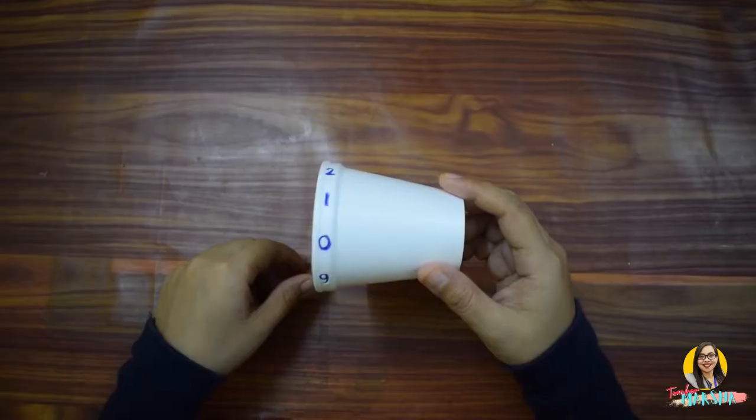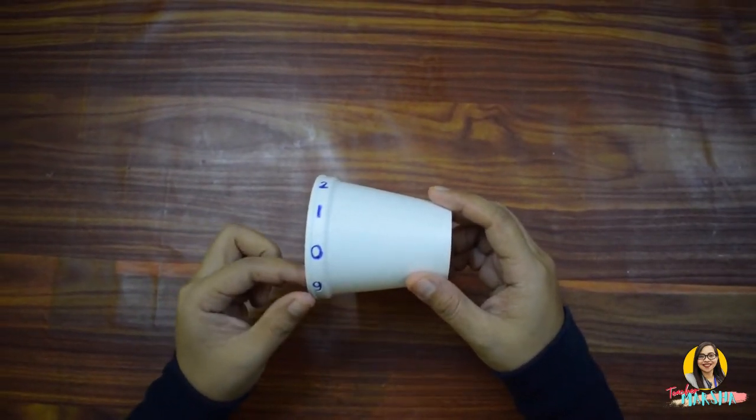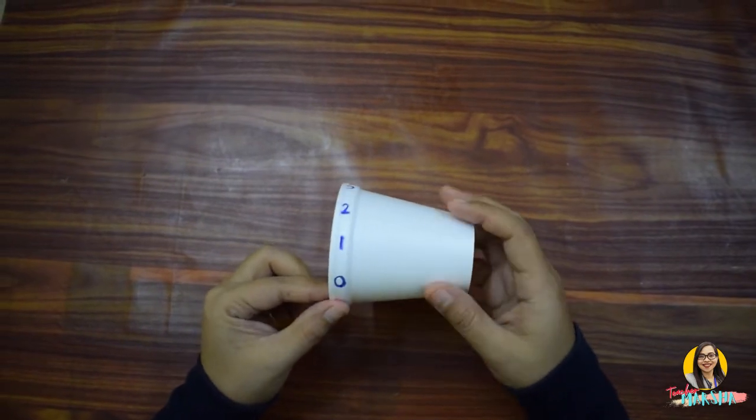Let's get started. First, you need to divide evenly the spaces in the lid from 0 to 9. Then,